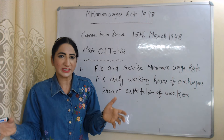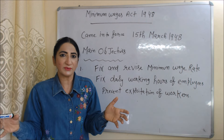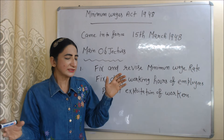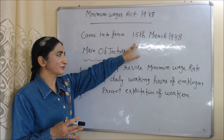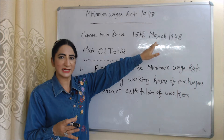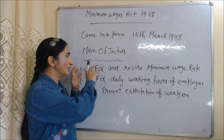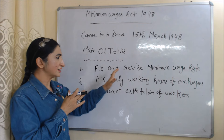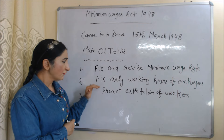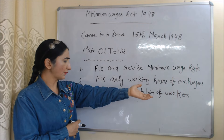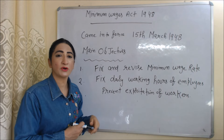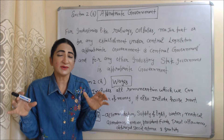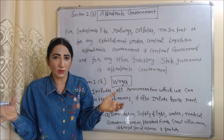By fixing a minimum wage rate, the government tried to ensure a minimum remuneration for work done by laborers. This act came into force on 15th March 1948. The main objectives of this act are to fix and revise minimum wage rates, fix daily working hours of employees, and prevent exploitation of workers.